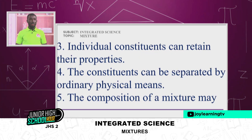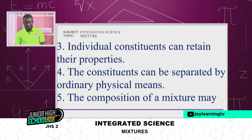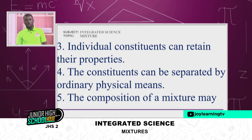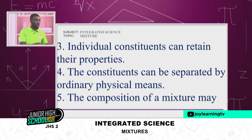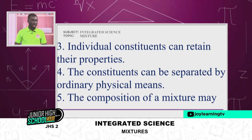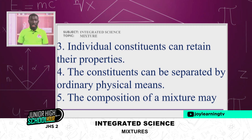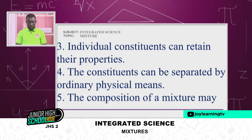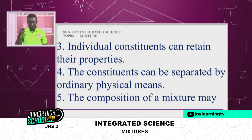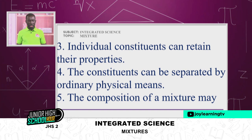Number three — the third physical characteristic of a mixture: individual constituents of a mixture can always retain their properties. The fact that I brought pebbles together with pieces of chalk in one bowl doesn't mean the pebbles have been turned into chalk pieces, or vice versa. It doesn't happen because each of them retains its physical property. Four: the constituents can be separated by ordinary physical means — physical combination, physical means.